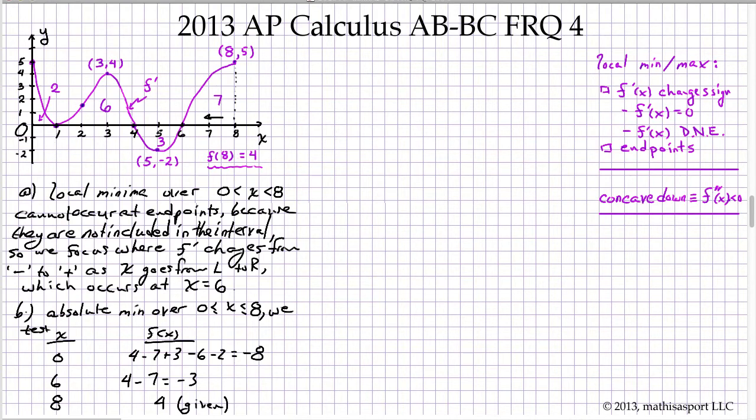And so our absolute minimum is negative 8, and it occurs at x equals 0. So let's just finish that up. Min is negative 8. And note that we don't say where it occurs in part because the absolute minimum could occur at multiple places. But when they ask for absolute minimum, they're focusing on the function's value, not the position in x where it occurs.